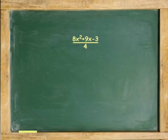First, we'll divide a polynomial by a monomial. For example, divide 8x squared plus 9x minus 3 by 4. Each term of the numerator is divided by 4. First, 8x squared divided by 4 equals 2x squared.